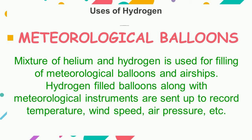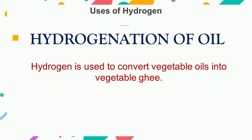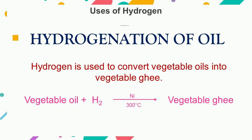Hydrogen is also used for hydrogenation of oils. When hydrogen gas is passed through vegetable oils in the presence of finely divided nickel, which acts as a catalyst, at a temperature of about 300 degrees Celsius, vegetable ghee is formed.